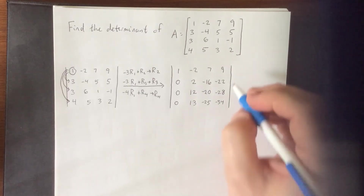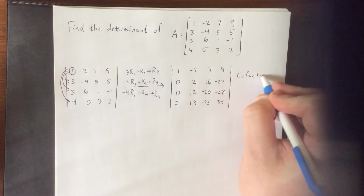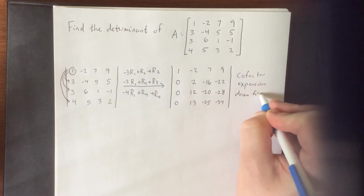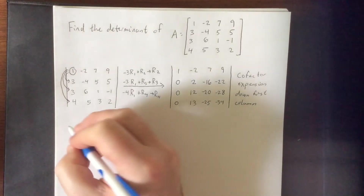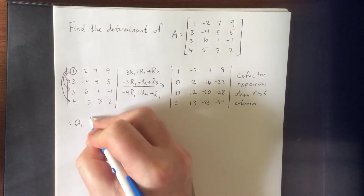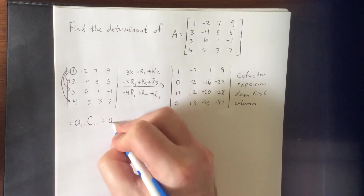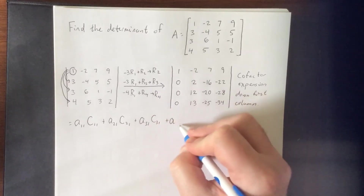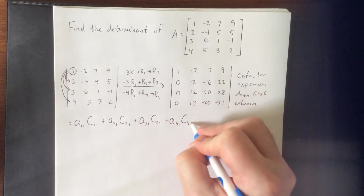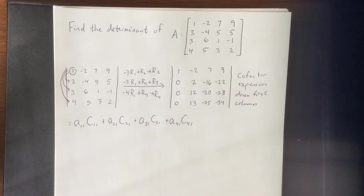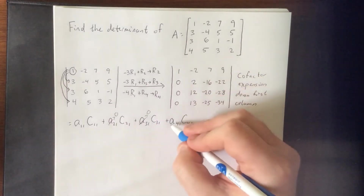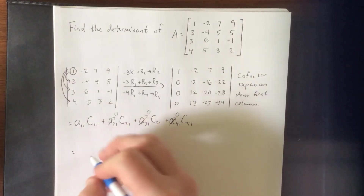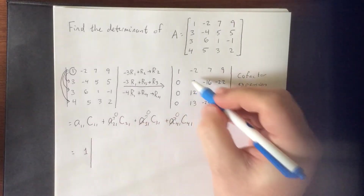At this point we'll do a cofactor expansion down the first column. That's the 1,1 entry times the 1,1 cofactor, plus the 2,1 entry times the 2,1 cofactor, plus the 3,1 entry times the 3,1 cofactor, plus the 4,1 entry times the 4,1 cofactor. However, the 2,1, 3,1, and 4,1 entries are all zero, so those terms vanish. We're left with just the 1,1 entry times the 1,1 cofactor.